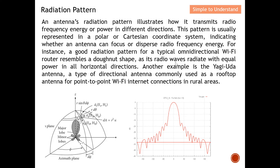Another example is the Yagi-Uda antenna, a directional antenna commonly used on rooftops, mainly for point-to-point Wi-Fi internet connections in rural areas. Because you want high gain, you want the antenna to be directive. In contrast, in an urban environment, we prefer an omni-directional antenna to provide Wi-Fi coverage almost everywhere.